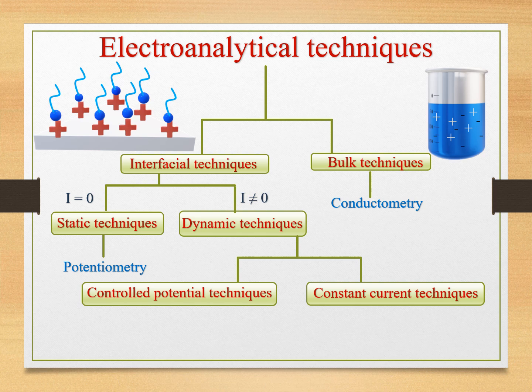In constant current techniques, there is a constant current flow in the system. Examples of this case are coulometry and electrogravimetry. In the controlled potential technique, which is one of the most interesting techniques in electroanalytical technique, as the name indicates, we control the potential in the reaction and measure the current. Examples of these techniques are amperometry and voltammetry. In the case of coulometry and electrogravimetry, both cases are applicable—that is, constant current and controlled potential cases.